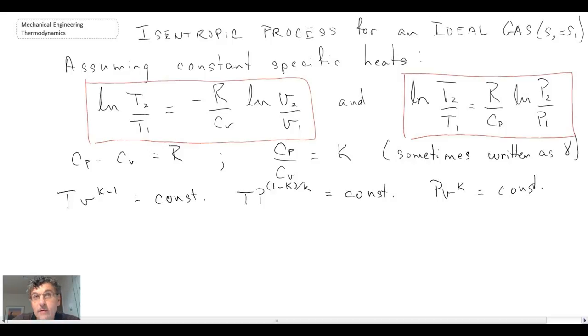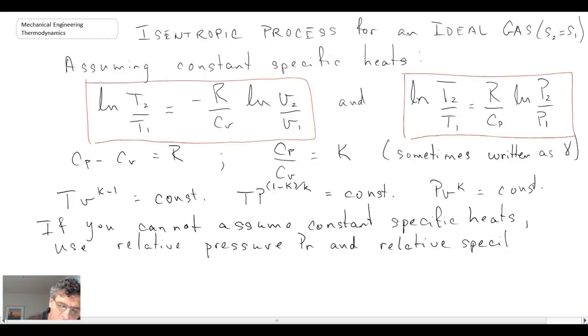Now, if you are dealing with the problem whereby you do have large temperature changes between your first state and your second state, then there are tables that you can look up in the back of the book that can help you with that. So if you cannot assume constant specific heats there, then what you would do is you would use the relative pressure as well as the relative specific volume. And that is usually tabulated within your textbook.